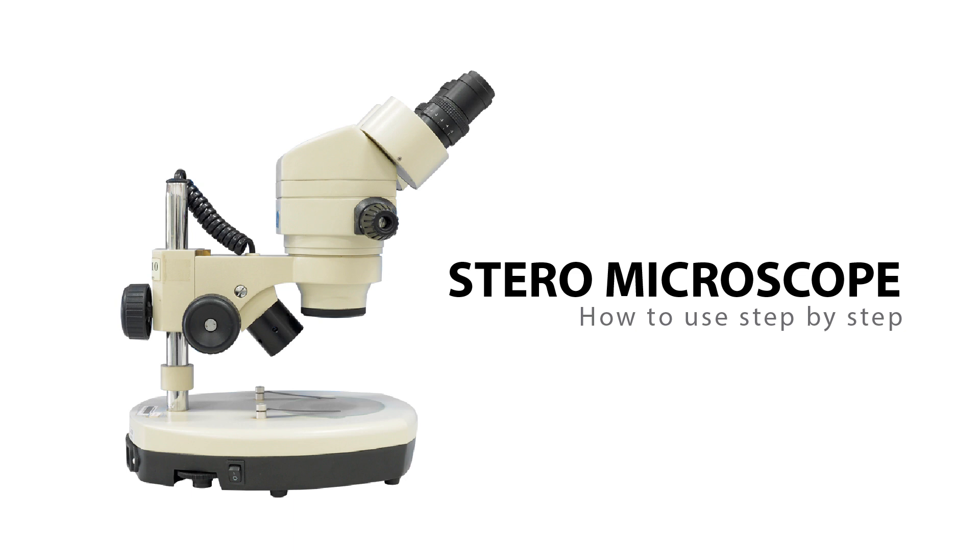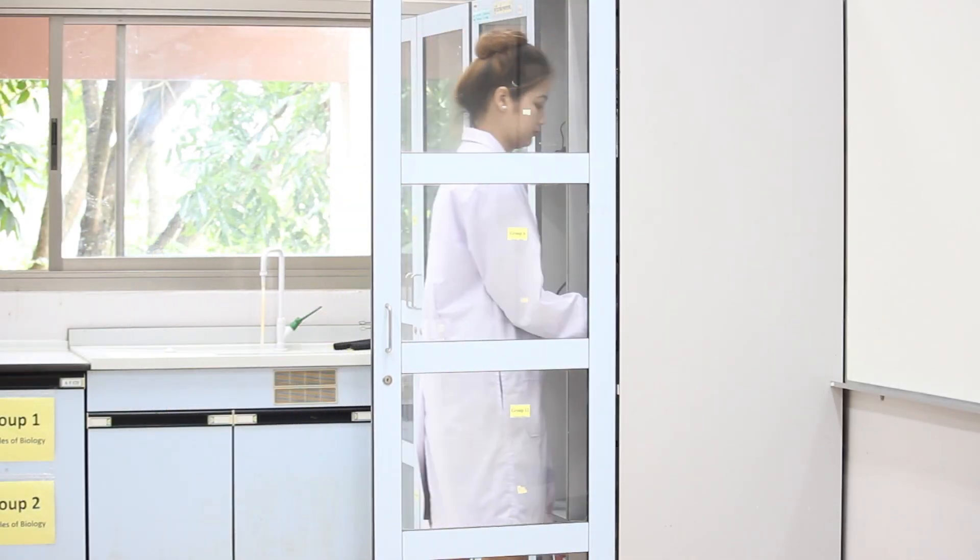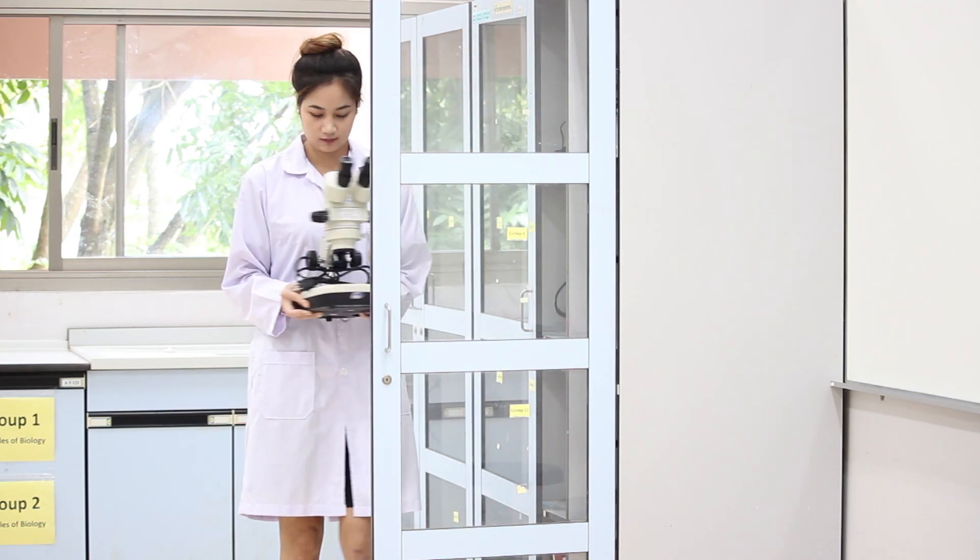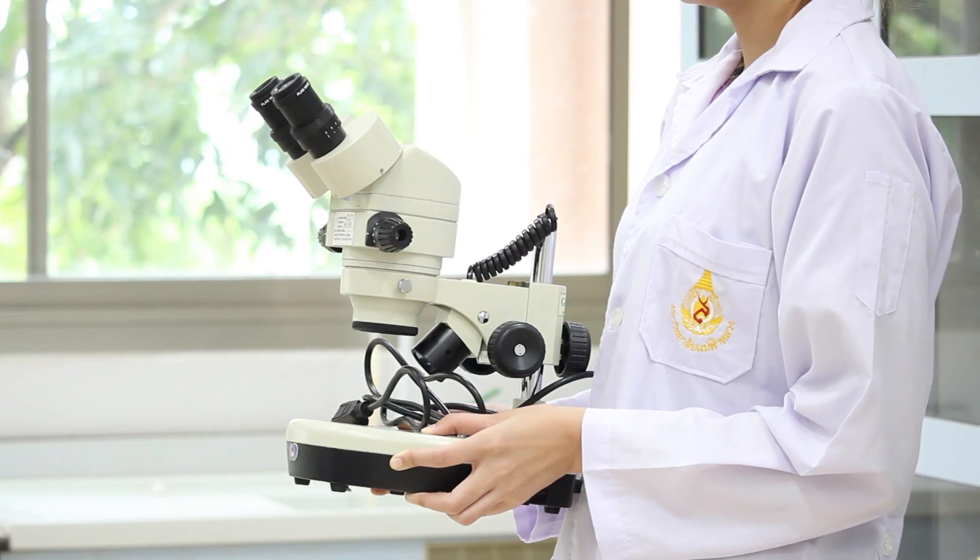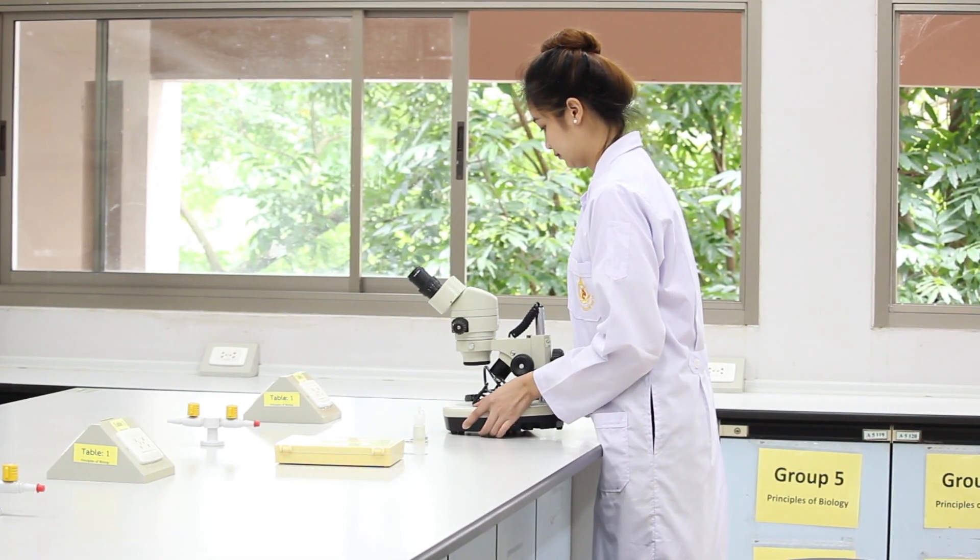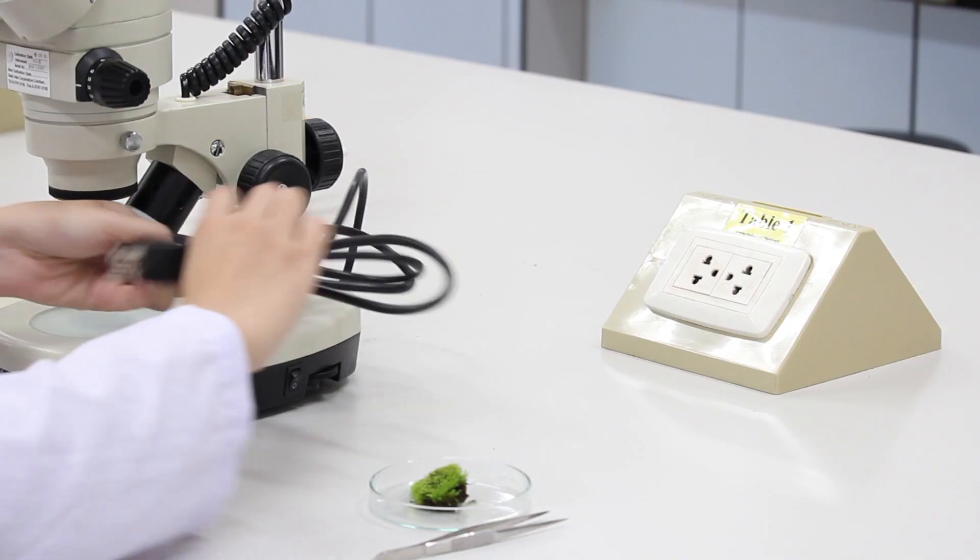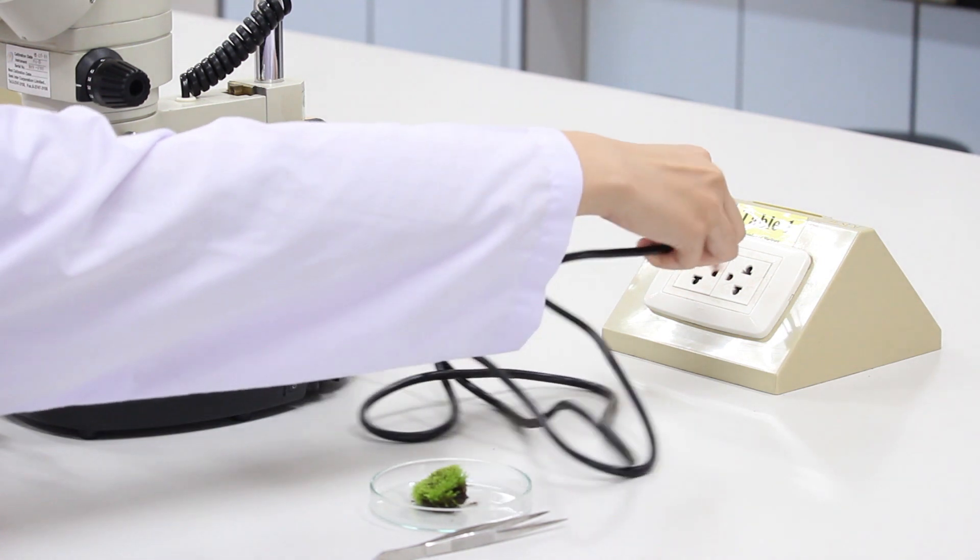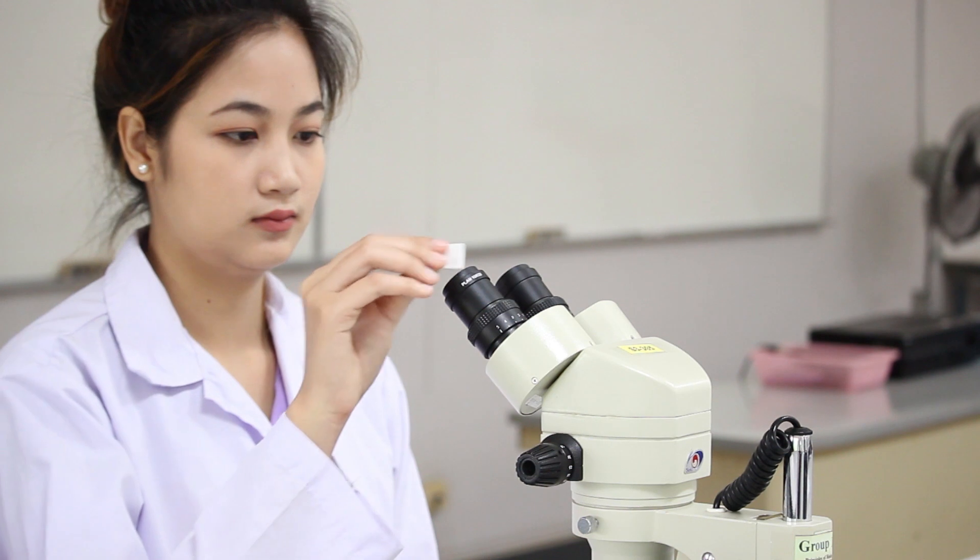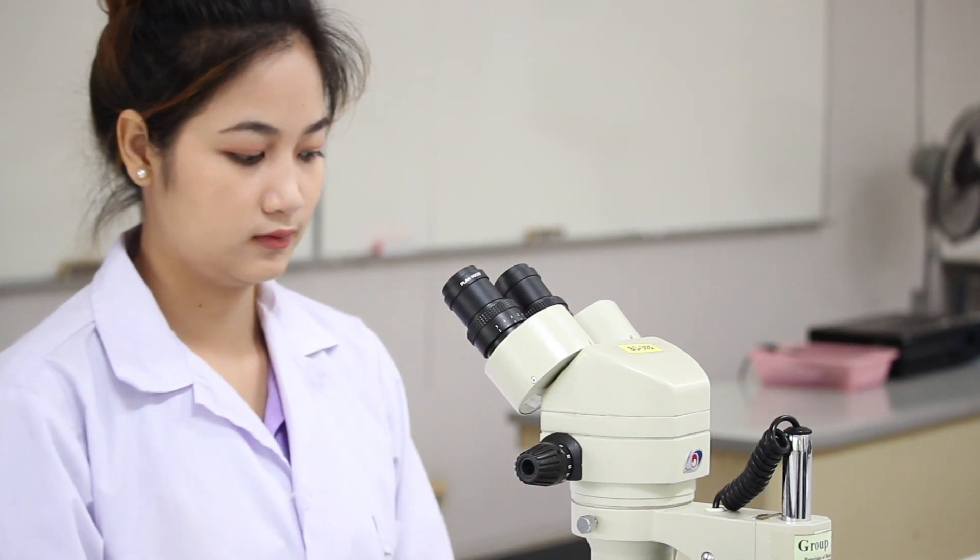Let's start how to use a stereo microscope. First, carefully take the microscope from the cabinet by using both hands to hold the base of the microscope. Then, put the microscope on the bench. Next, plug the power cord of the microscope into the power socket on the bench. And then, clean the objective lens and the eyepieces by using the lens paper.